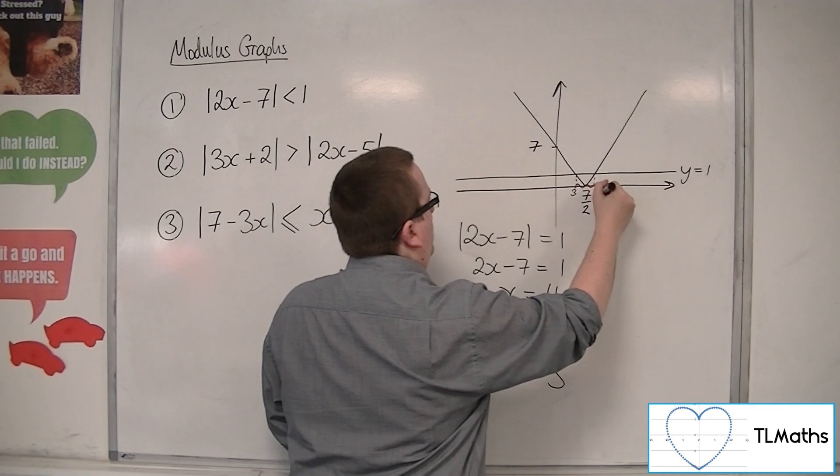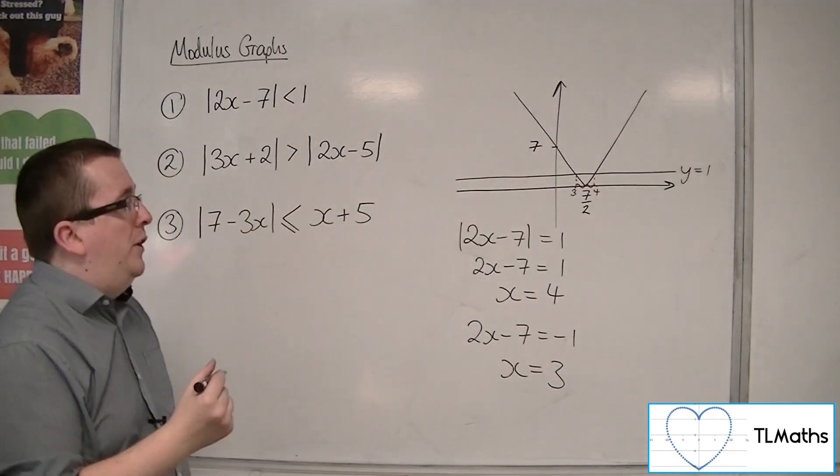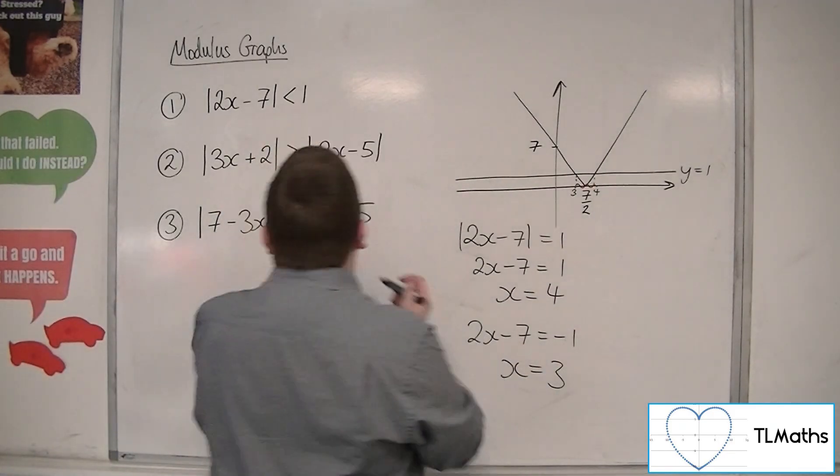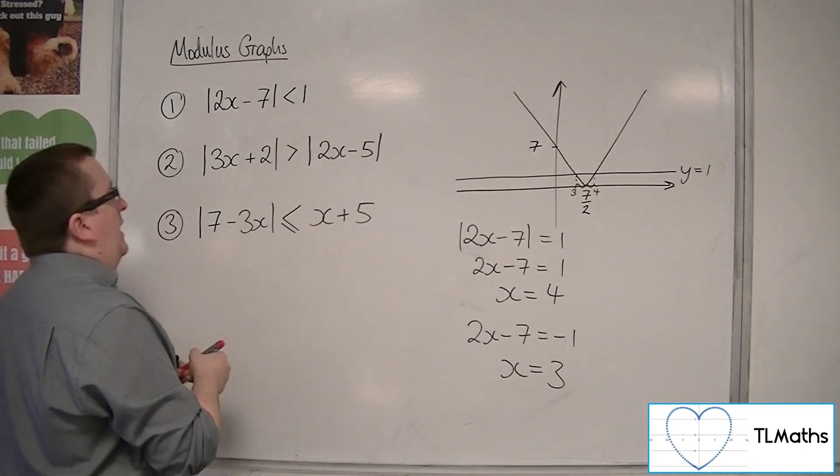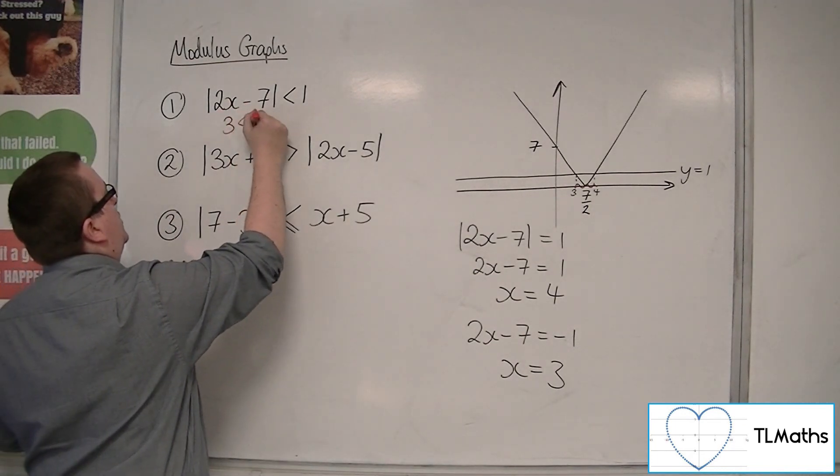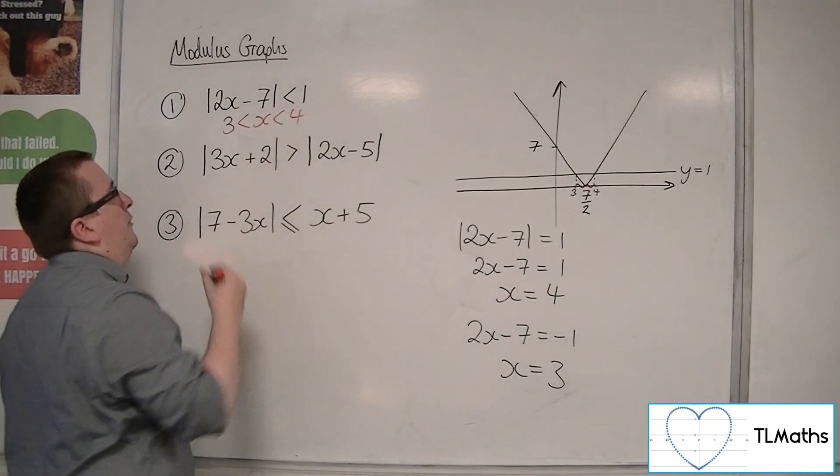So, this point is 3, that point is 4, and so the solution to this inequality is that x would have to have been between 3 and 4.